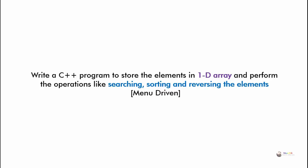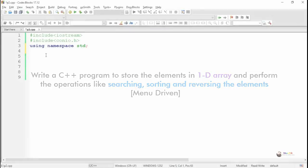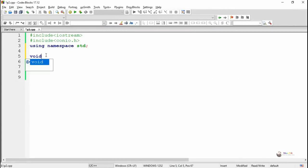Write a C++ program to store the elements in a one-dimensional array and perform the operations like searching, sorting, and reversing the elements of the array. In order to do this C++ program, we are writing different functions for performing the three operations: searching, sorting, and reversing the elements of a one-dimensional array.